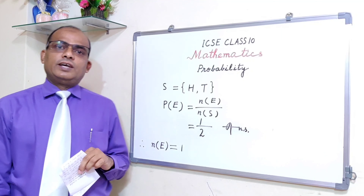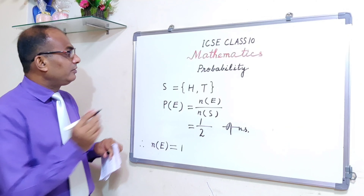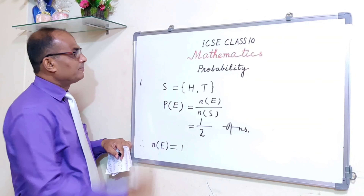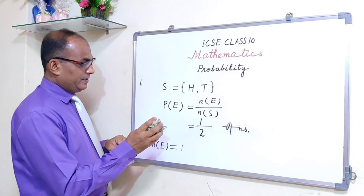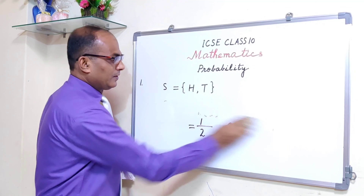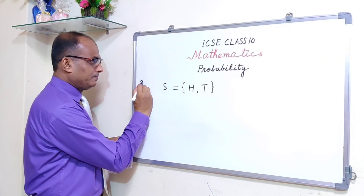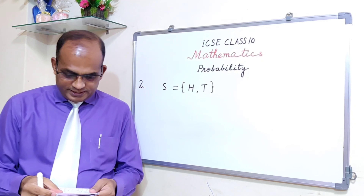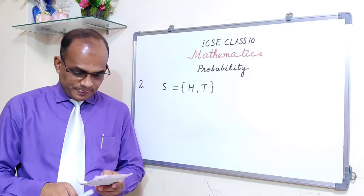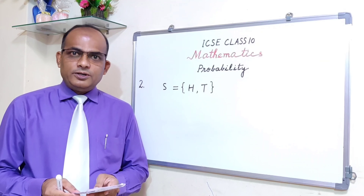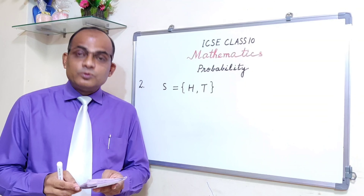So the answer is 1/2 — easy, right? Let's take the next question. Two identical coins are thrown simultaneously. Find the probability of: first sub-question, at least one tail; second sub-question, at the most one tail.